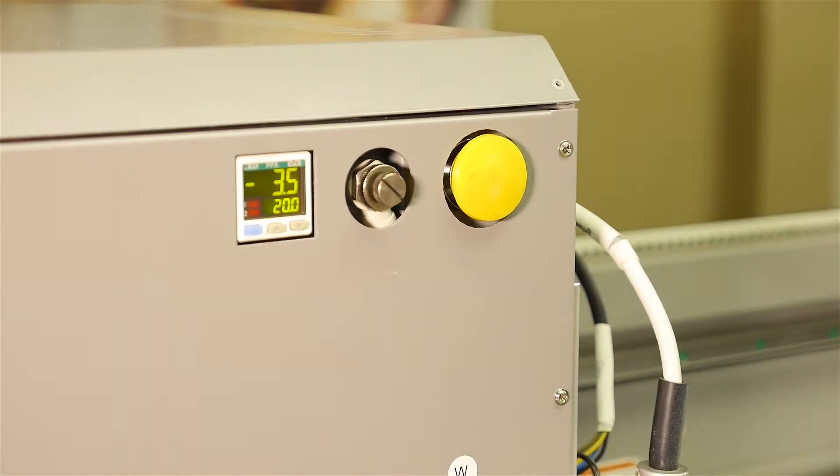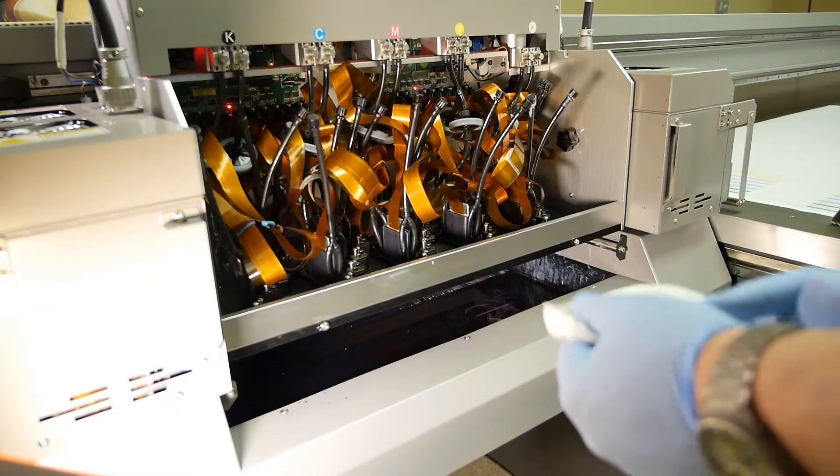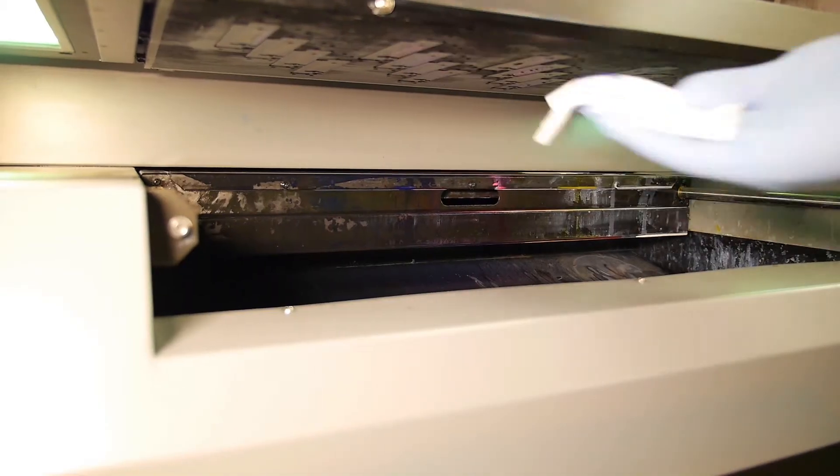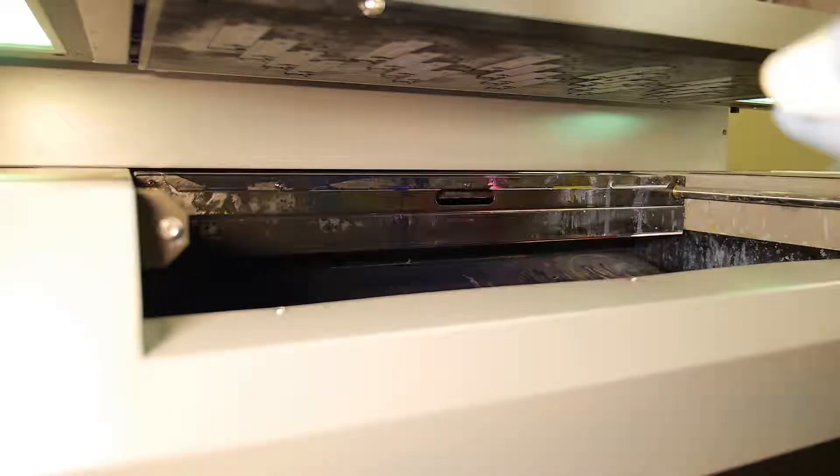Once the negative pressure has returned to negative 3.5, use a new lint-free cloth and gently wipe the ink off the bottom of the printheads.